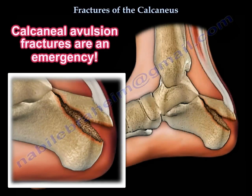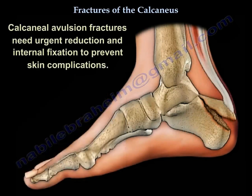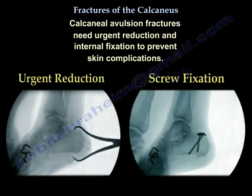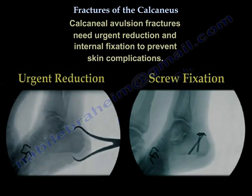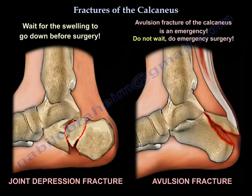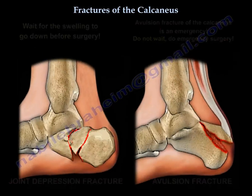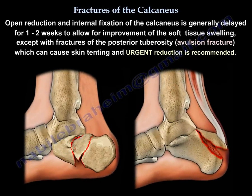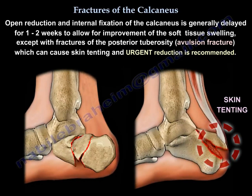A calcaneal avulsion fracture is an important topic — it is an emergency that needs urgent reduction and internal fixation to prevent skin complications. In joint depression fractures of the calcaneus, you wait for the swelling to go down before surgery. However, for an avulsion fracture of the calcaneus, you do not wait — you perform emergency surgery. Open reduction and internal fixation is generally delayed one to two weeks to allow soft tissue swelling to improve, except with fractures of the posterior tuberosity — the avulsion fracture — which can cause skin tenting, making urgent reduction necessary.